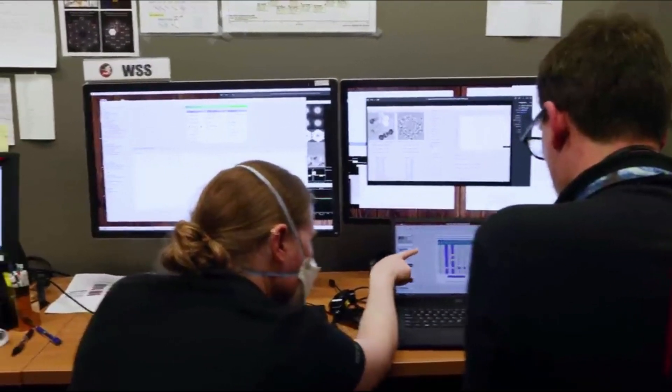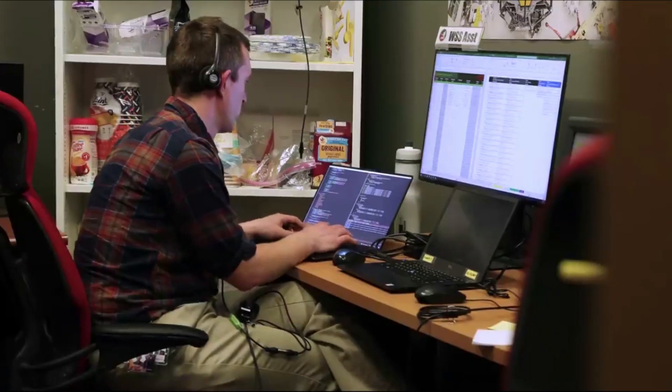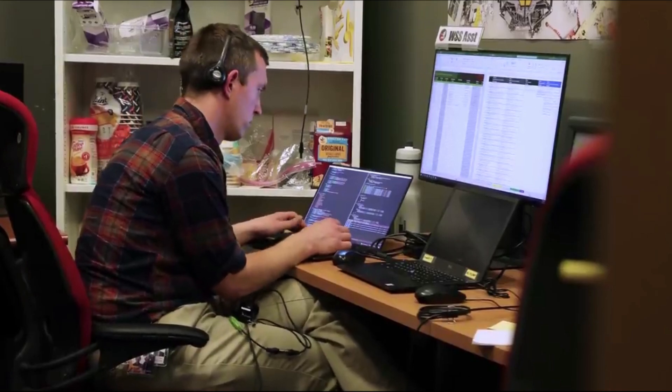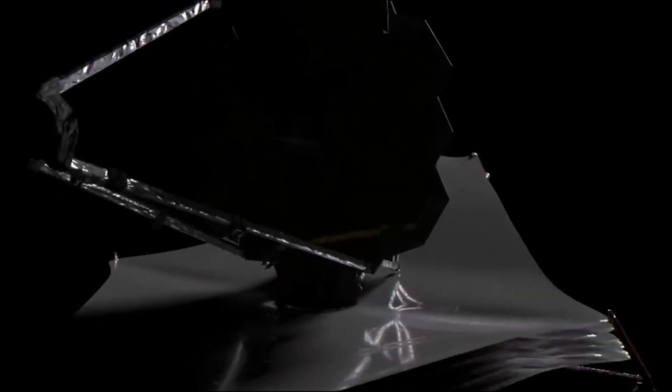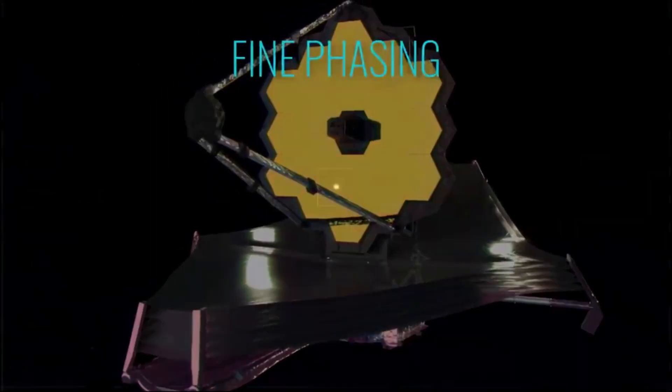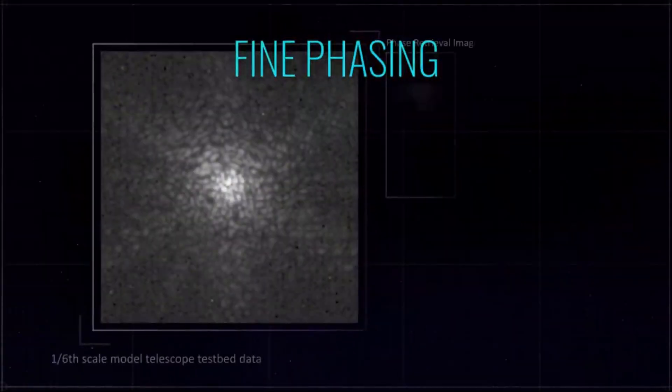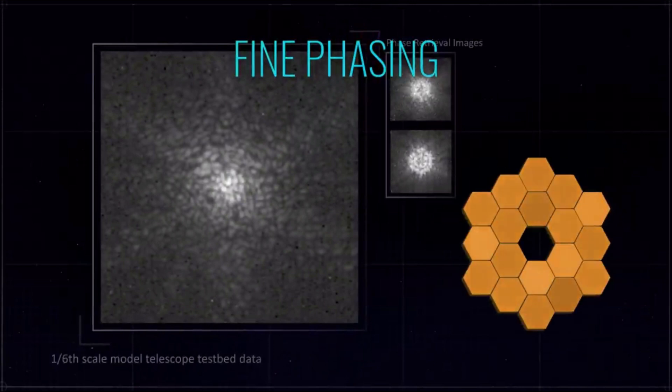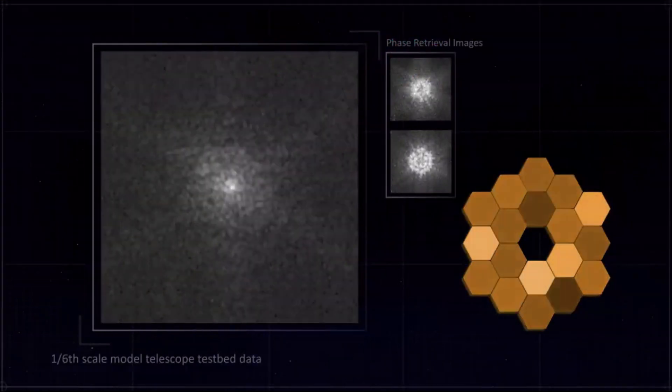This seventh stage of alignment that was just completed is referred to as the iterate alignment for final correction stage. Here, after applying the field of view correction, the key thing left to address is the removal of any small residual positioning errors in the primary mirror segments. NASA measures and makes corrections using the fine phasing process. They then do a final check of the image quality across each of the science instruments.